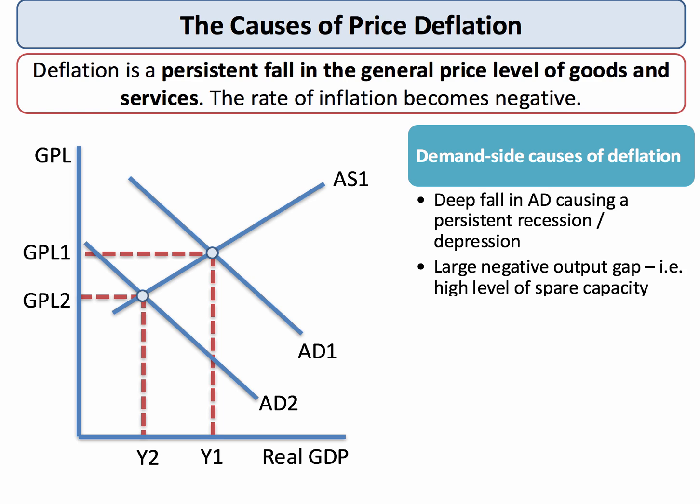A fundamental cause of demand-side deflation can be a very deep, very large fall in aggregate demand, causing a persistent recession or perhaps even a depression. The rule of thumb for a depression is when national output from peak to trough falls by at least 10%. Demand-side deflation is nearly always caused by almost semi-permanent recessionary conditions, where the economy has a very negative output gap with lots of spare capacity and insufficient demand for prices to stay where they are.